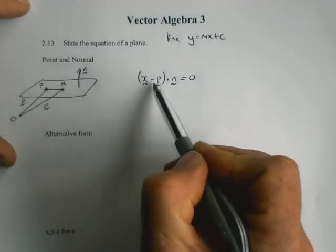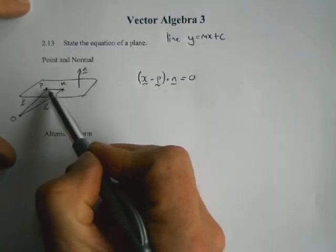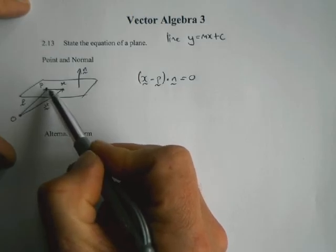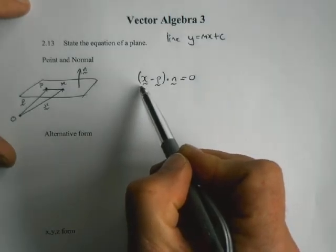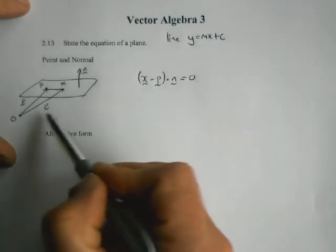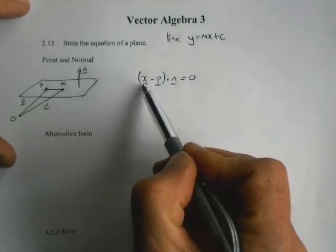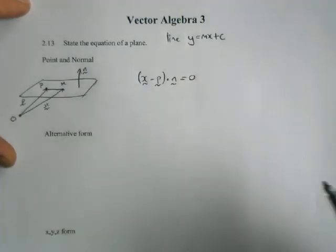So this vector goes through the point P, and it's at right angles to the normal, so it must lie in the plane. So any values of x, any position vectors from the origin to the point x, any position vectors x for which this is true, means that the point x lies in the plane. So this becomes the equation of a plane.